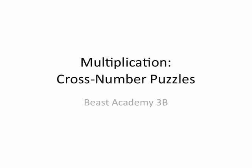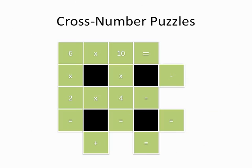We'll start with example number 63. In this cross-number puzzle, notice that you have multiplication going across. 6 times 10, for example, is our very first row.